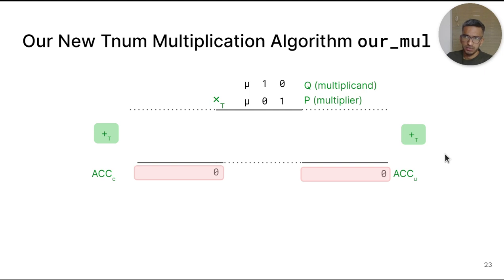We improve the precision of this last algorithm by leveraging some specific properties of TNUM abstract addition. We call this final algorithm our_mul. Instead of a single accumulator ACK, our_mul decomposes the addition into two accumulator TNUMs. Informally, ACK_C and ACK_U correspond to the certain and uncertain parts of the partial products respectively. Going back to our example, the least significant trit of P is 1 and ACK_C accumulates the known trits in Q. That is, Q with all of its mu trits set to 0.